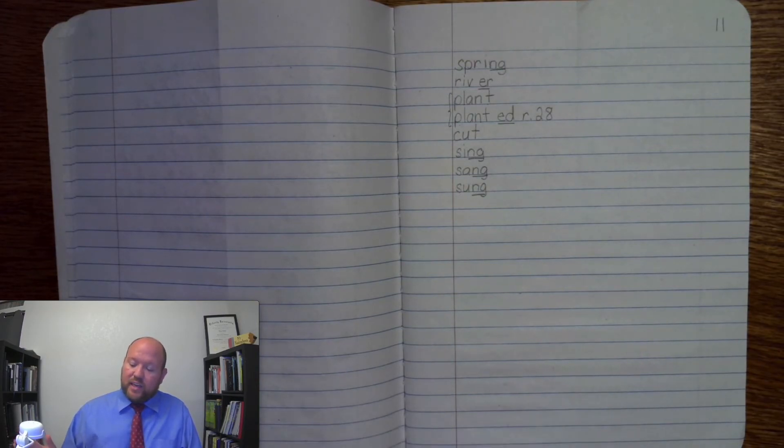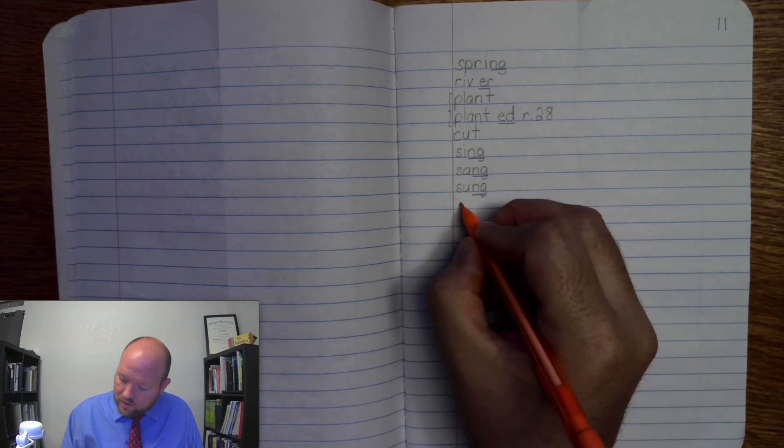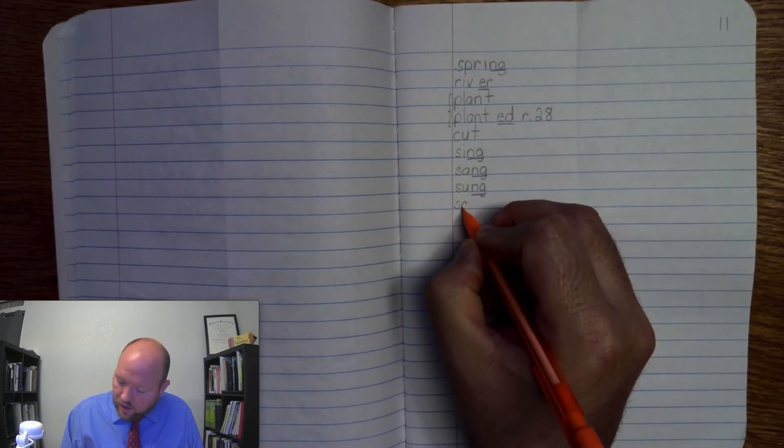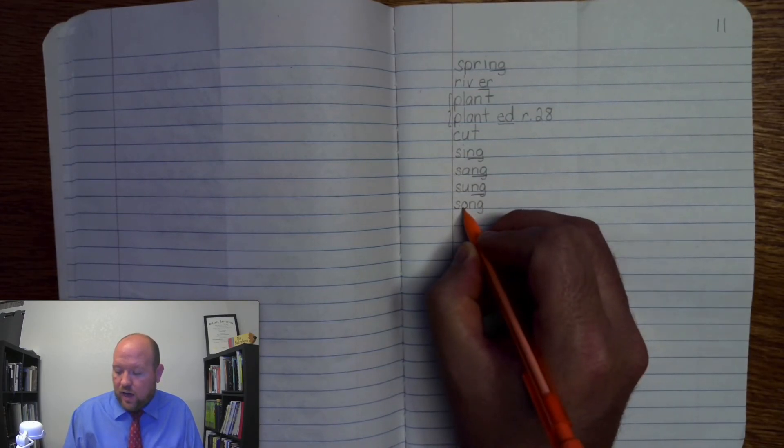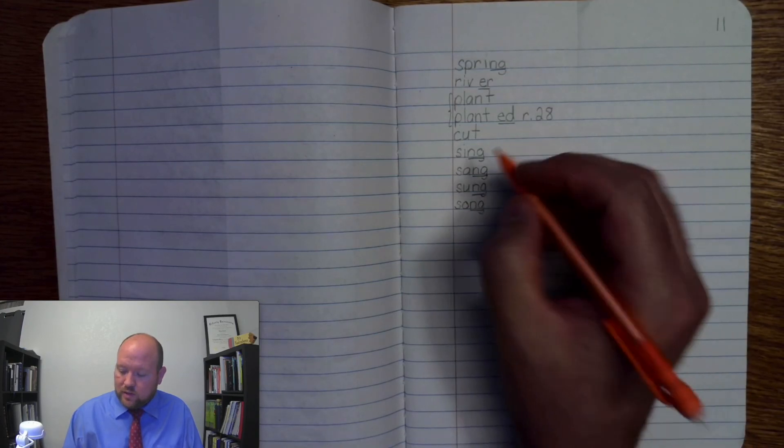Song. And the last word in this little grouping is the word song. So all this singing and sang and sung, those aren't words, but you sing a song, right? Song, base word song. S-O-N-G, song. S-O-N-G, song. Markings, S-O-N-G, once, song. And we will brace all four of those.